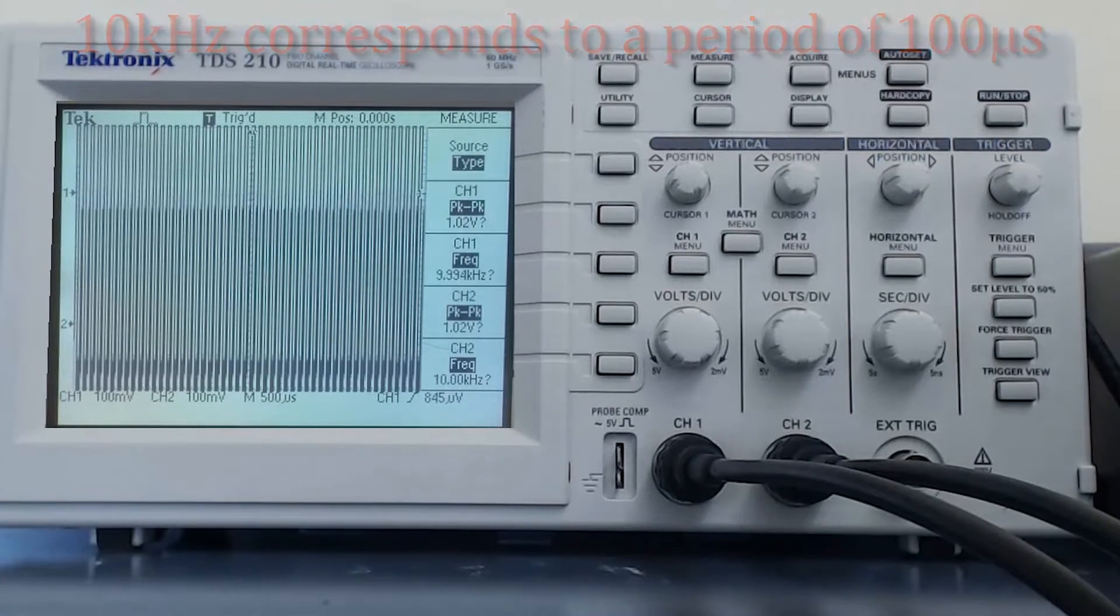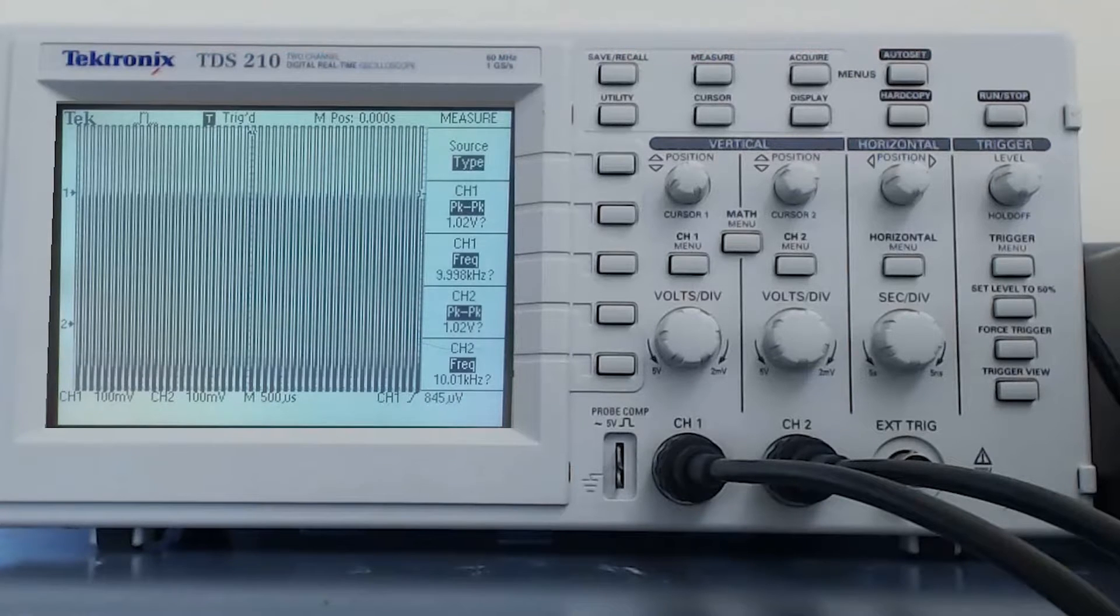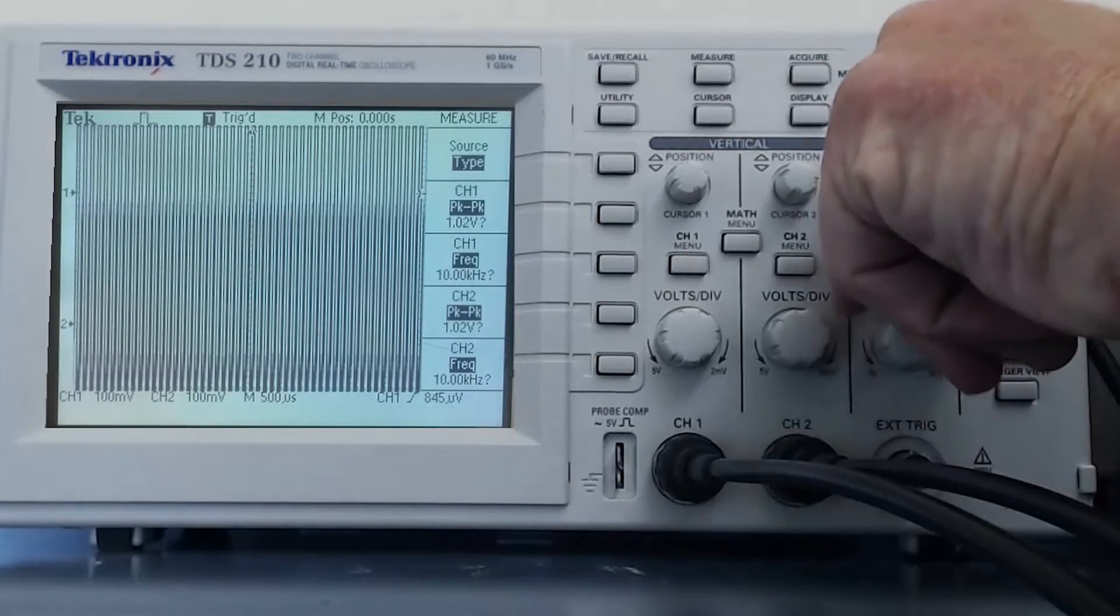So, for us to see the waveforms on the oscilloscope, we will have to adjust the seconds per division so that the full screen displays slightly more than 100 microseconds for us to see at least one full waveform.